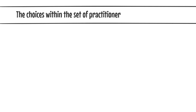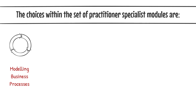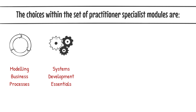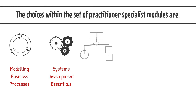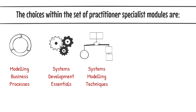The choices within the practitioner specialist modules are: Modelling Business Processes, which provides detailed coverage of the approach and techniques required for business process improvement; Systems Development Essentials, which introduces the standard approaches to systems development and explores the principles and techniques used within agile software development; and Systems Modelling Techniques, which covers the techniques used to model and specify IT system requirements.